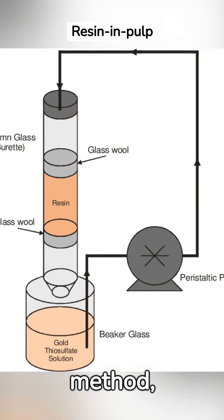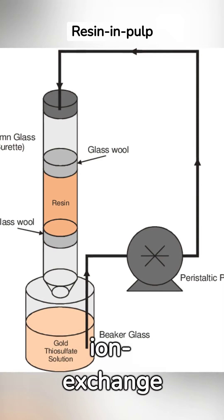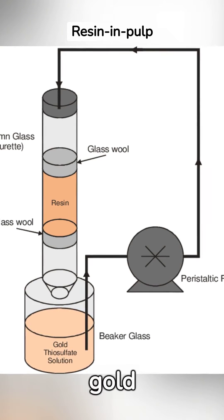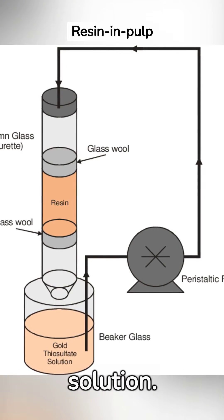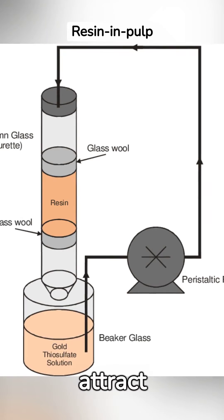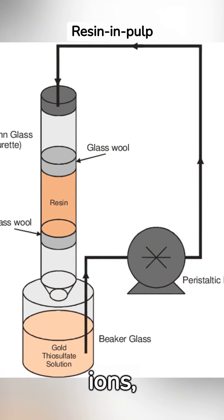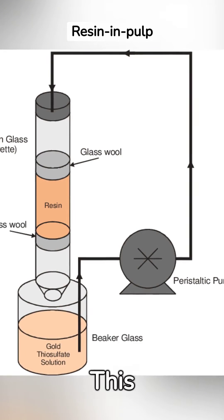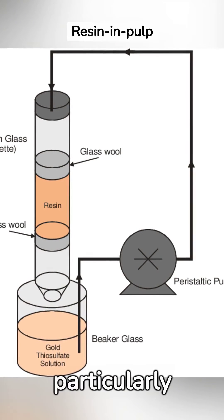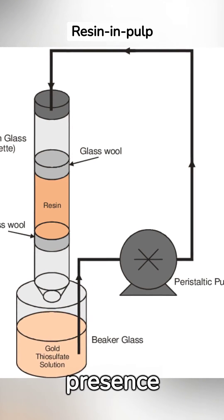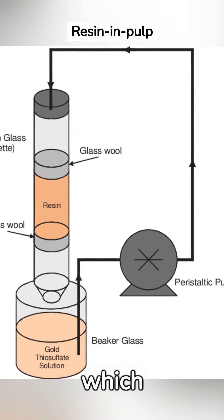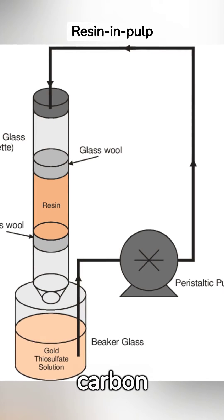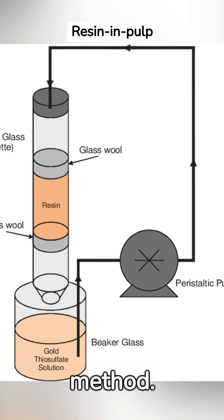In the resin and pulp method, ion exchange resins are used to recover gold from the solution. The resins attract gold ions, which are then stripped off. This method is particularly effective in the presence of copper, which can pose challenges for the carbon adsorption method.